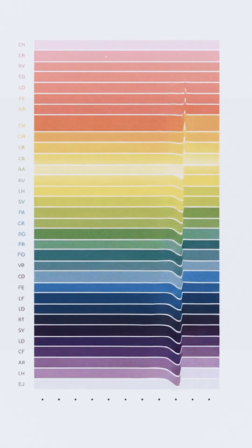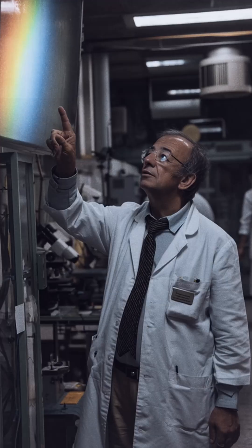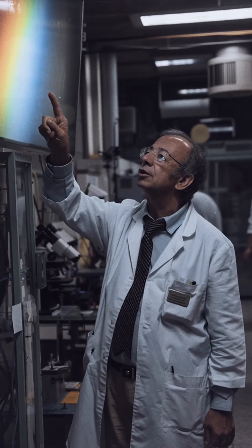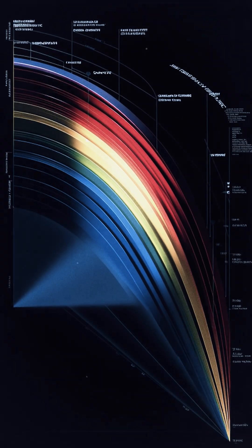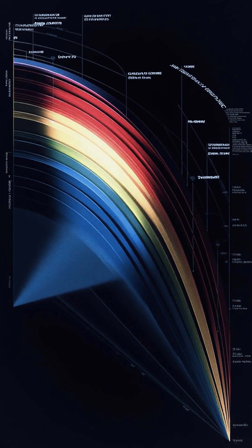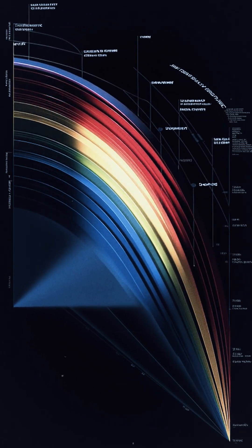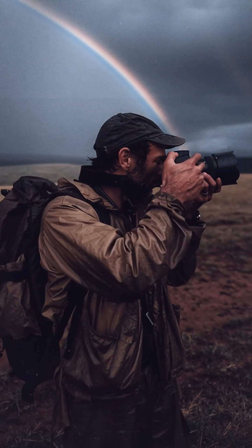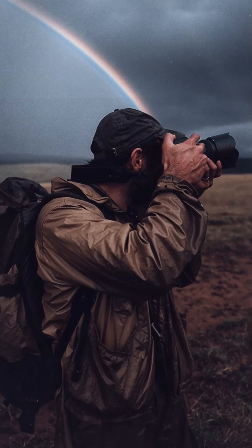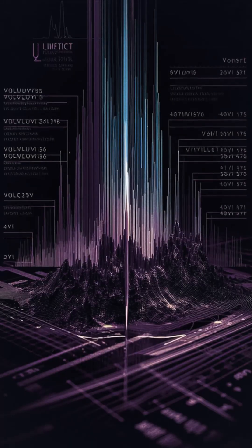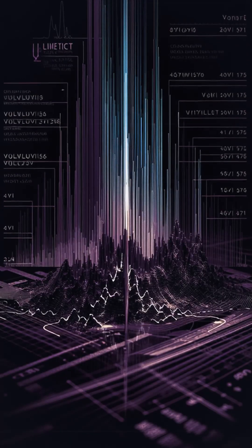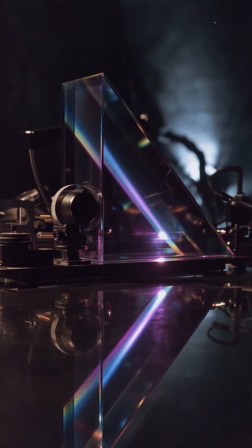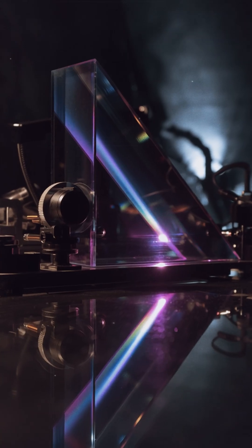Purple is unique among the colors we see because it doesn't exist as a single wavelength of light — it's a non-spectral color. Unlike red, green, or violet, there is no purple place on the rainbow. Violet is a real spectral color at the short wavelength end of visible light, right next to ultraviolet.